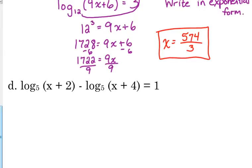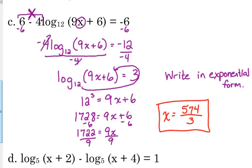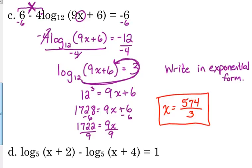Okay? Let's do another one. Yes. Writing in exponential form. Okay? My base was 12, so I go around the equal sign. 12 cubed is equal to 9x minus, or excuse me, 9x plus 6. Going from log form to exponential form.